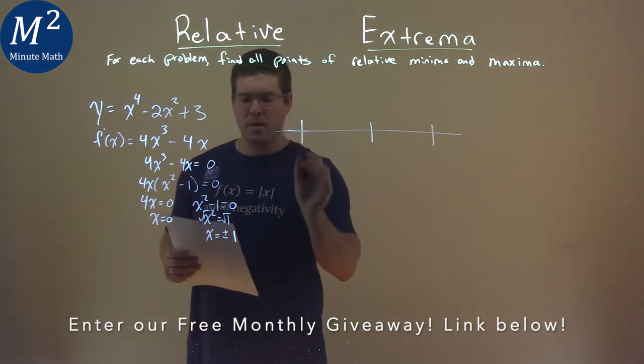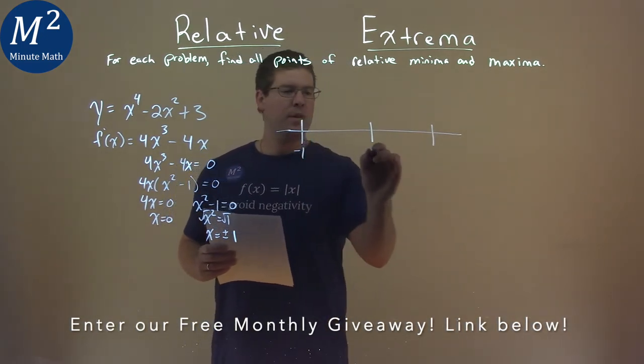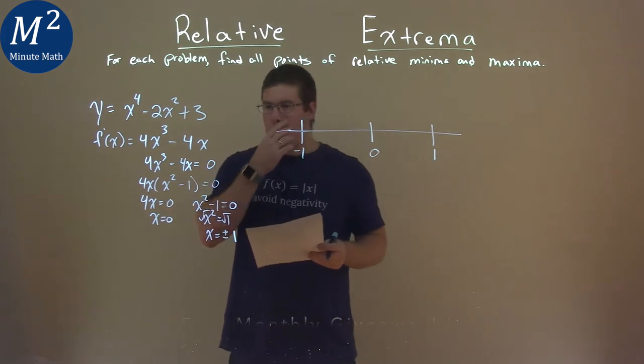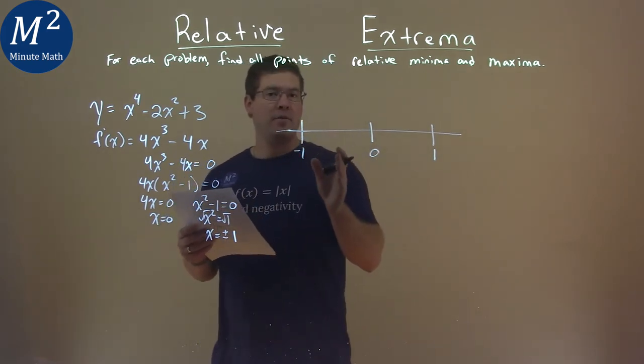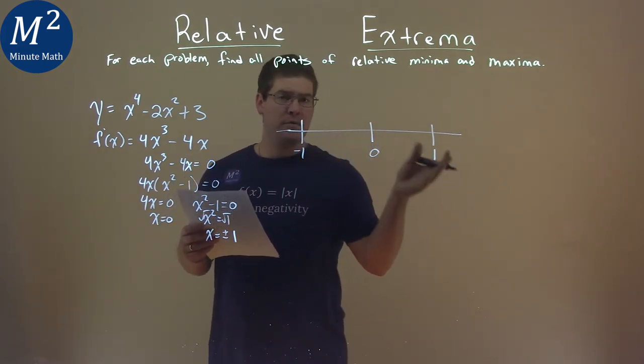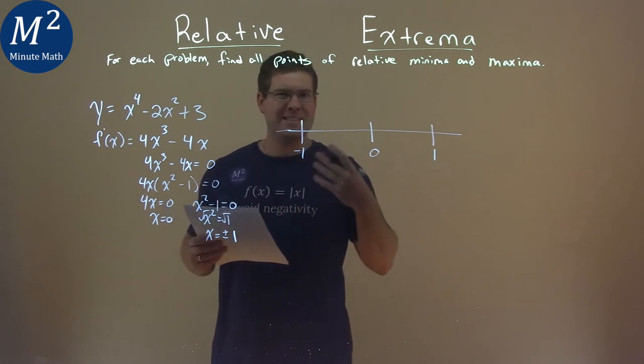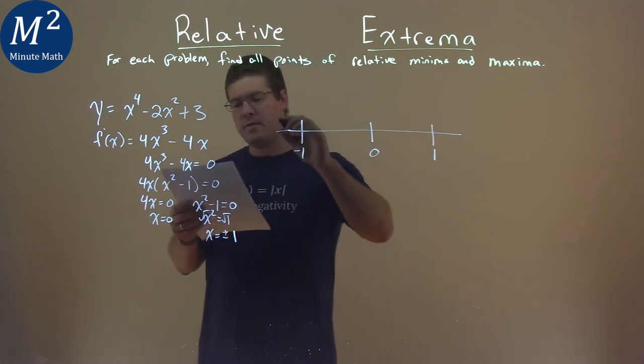So make our chart here. Okay, lowest number is negative 1, then 0, then positive 1. So what we're going to do is find values that are less than negative 1 or within our intervals here and plug it into our derivative and see what happens.